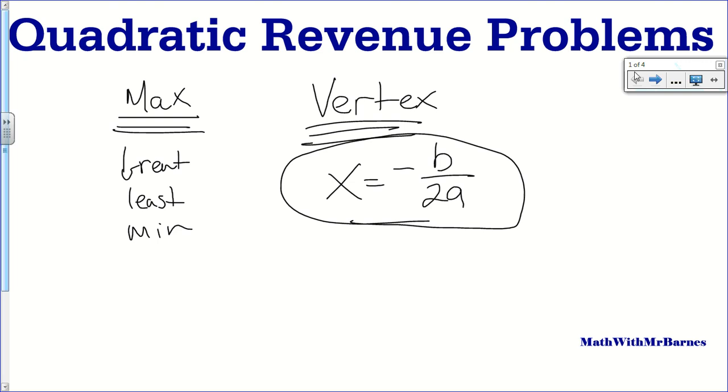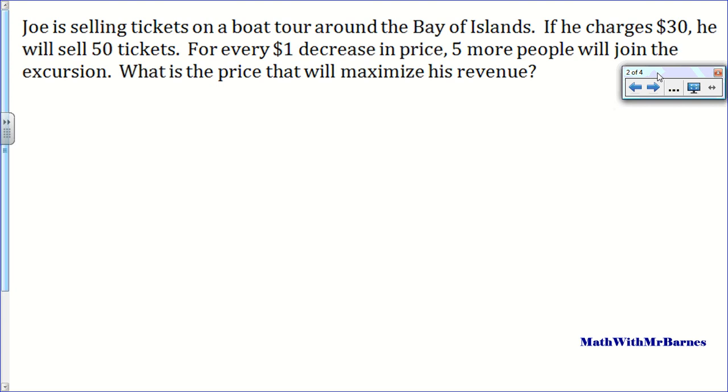So let's go ahead and look at a couple, I got three different examples here of varying difficulty levels. And let's have a look and see how we try them, how they go. Alright, so let me read the question to you and then let's pick some sense from it. So Joe is selling tickets on a boat tour around the Bay of Islands, my home. If he charges $30, he will sell 50 tickets. For every $1 decrease in price, five more people join the excursion. What is the price that will maximize revenue?